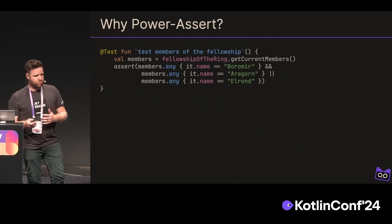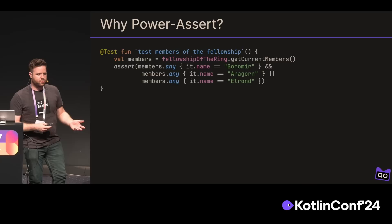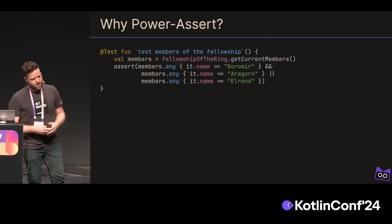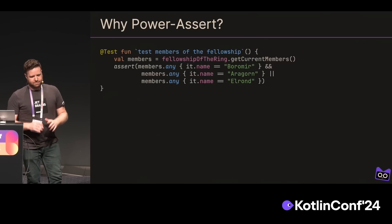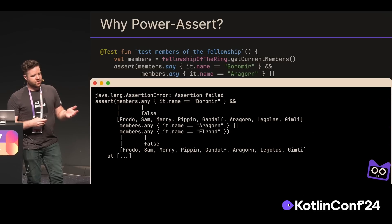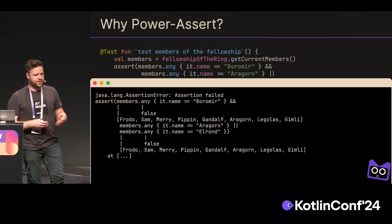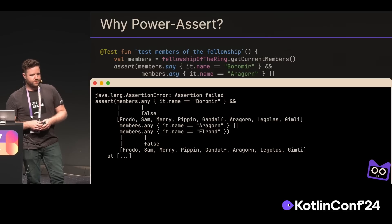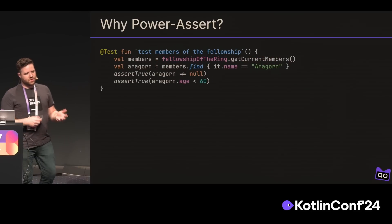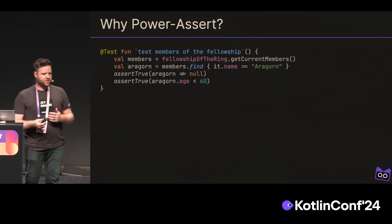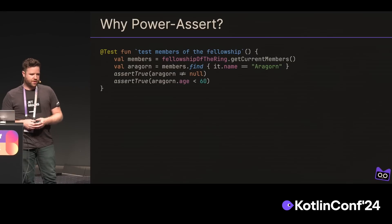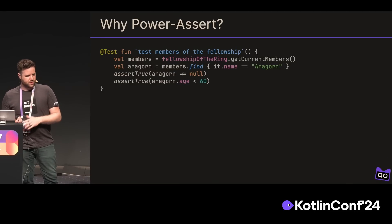This also extends to more complex examples. If you're doing more complex Boolean expressions — here of course is a totally wild example — we get an error message that shows each line and what the values were there. And this understands Boolean short-circuiting, so it won't display lines that weren't executed. But assert doesn't have a contract, and so you can't make not-null checks with it and get smart casting. But assert true does.